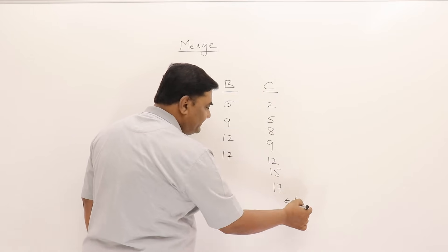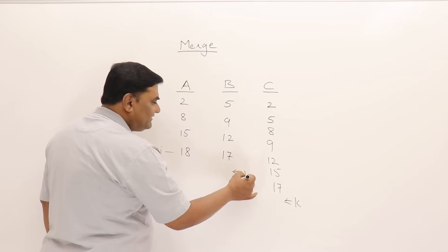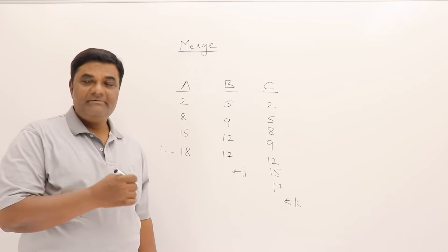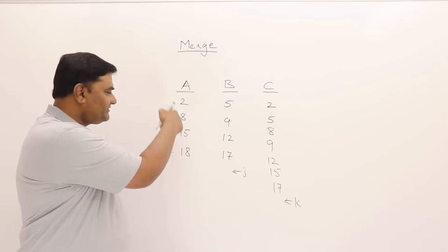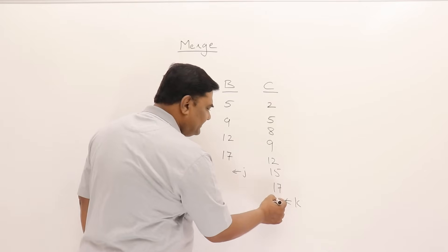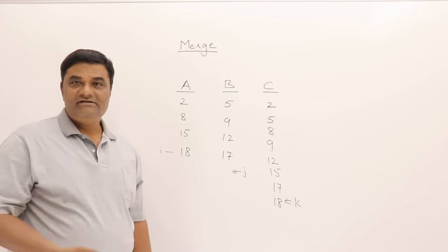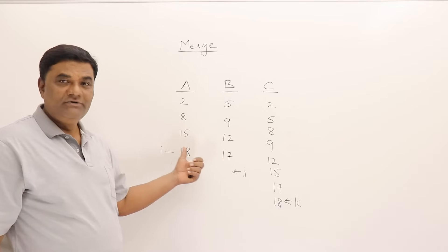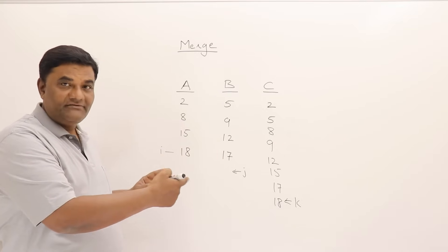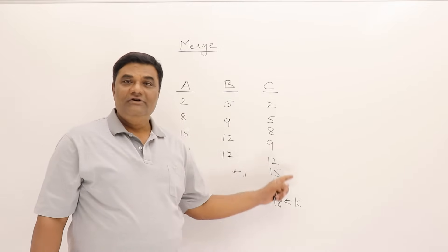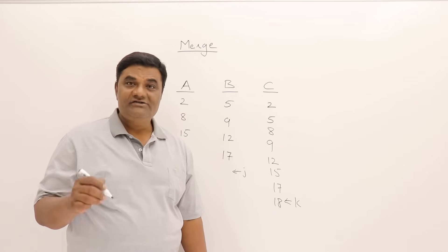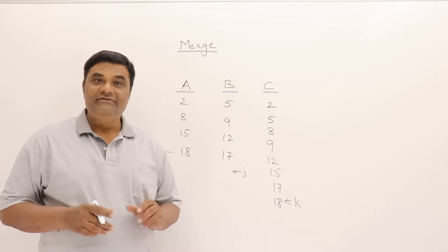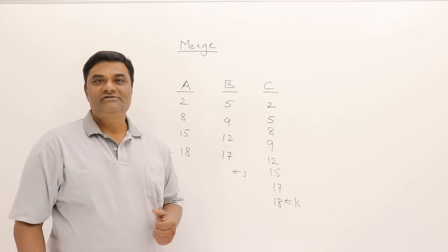K moves to the next free space. I is still pointing within list A while J has crossed the end of list B. One of the lists has finished. The remaining elements are in list A, so we simply copy those remaining elements into C. We've combined two lists by comparing elements one at a time, copying whichever is smaller, resulting in a sorted list C. This process is called merging.